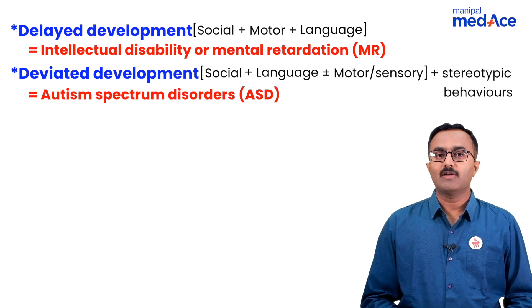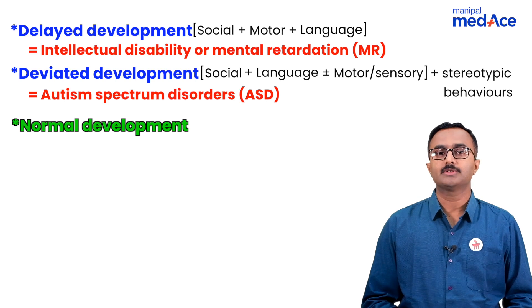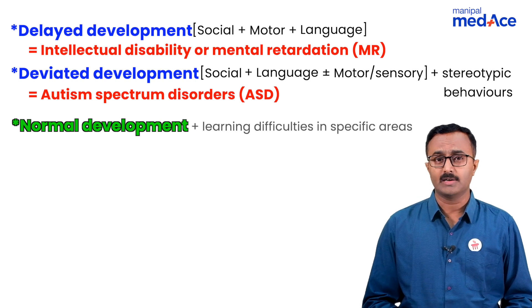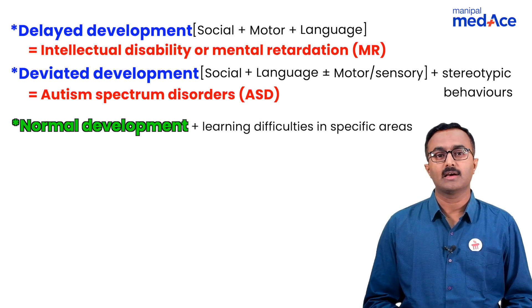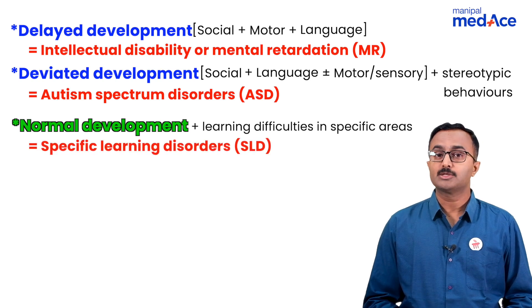When developmentally it is normal — all the milestones — but there are learning difficulties in specific areas like reading, writing, and spelling, they are referred to as specific learning disorders.